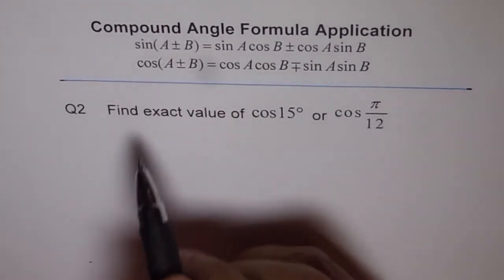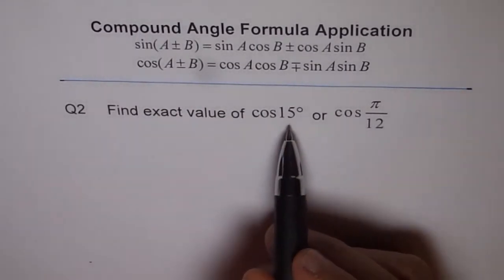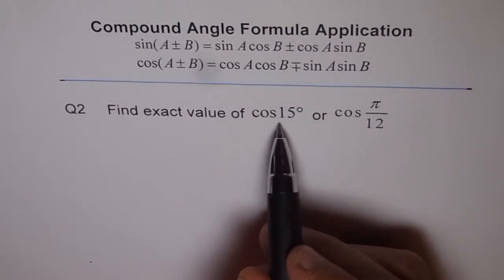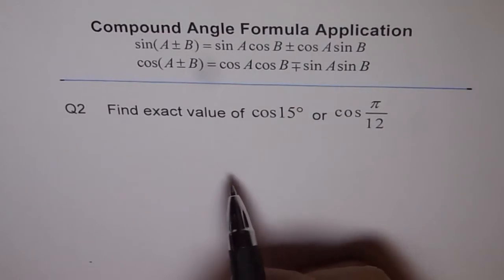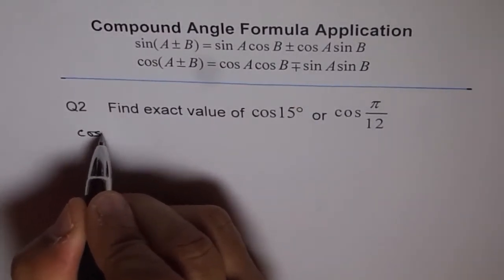We are going to apply the compound angle formula to figure out what is cos of 15. We know what is cos of 45, cos of 30 degrees.